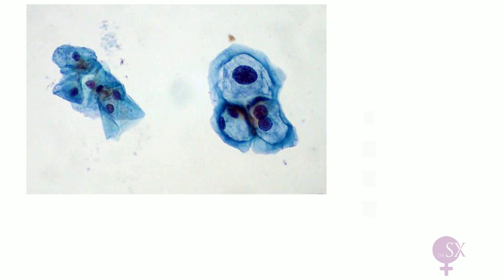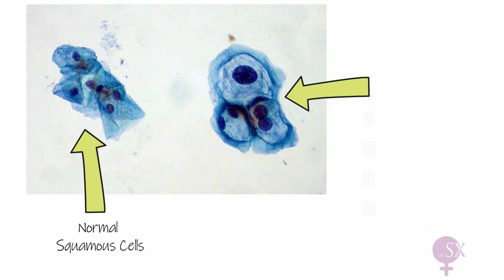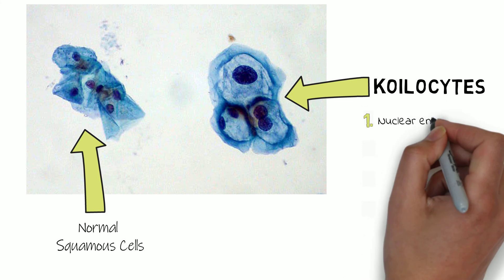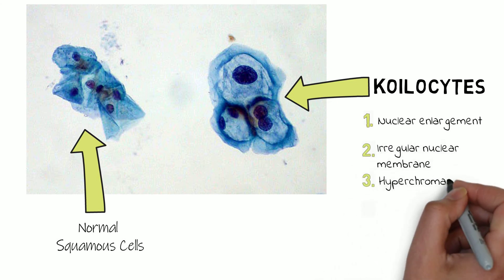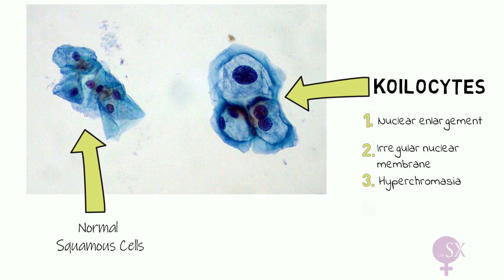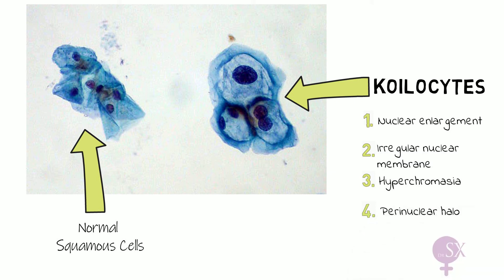Here we have a pap smear with normal squamous cells on one side, and cells with HPV changes called koilocytes on the other. There are four characteristic changes: nuclear enlargement with the nucleus two to three times the normal size, an irregular nuclear membrane, hyperchromasia which is a darker staining of the nucleus due to increased chromatin, and the perinuclear halo which is a clear area around the nucleus.